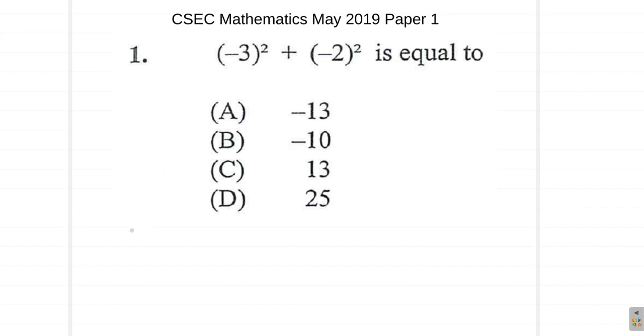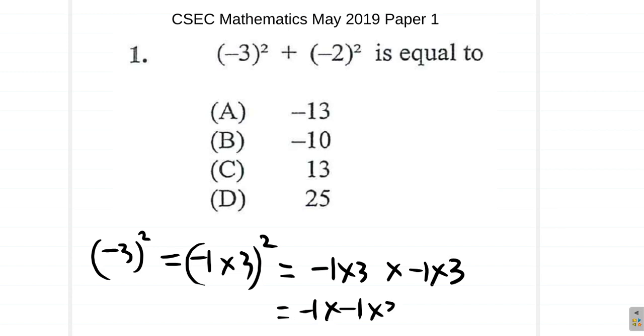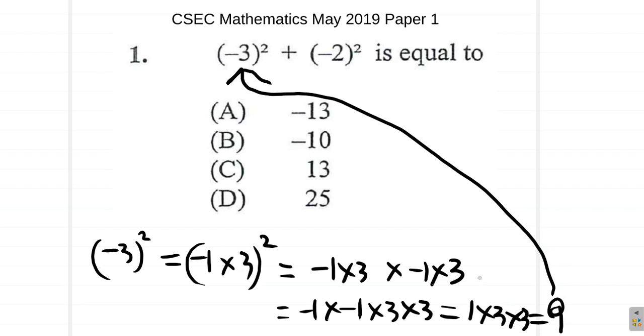We're going to go into the details of this thing. So, negative 3 squared means the same as negative 1 times 3 squared. You remember that, don't you? Yeah. Now, this is the same as negative 1 times 3 times negative 1 times 3. You notice you have negative 1 times negative 1 times 3 times 3, which gives you what? Negative 1 times negative 1 gives you positive 1. So, it's 1 times 3 times 3, which is 9. So, that's that. You see that?